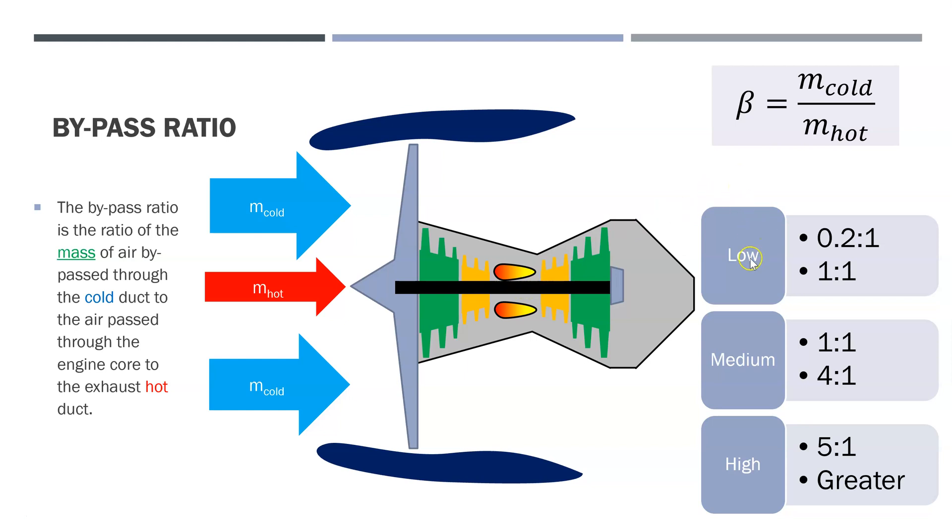Low bypass ratios will be somewhere between 0.2:1 to 1:1. A medium bypass engine will have a ratio of about 1:1 to 4:1. And a high bypass ratio is 5:1 or greater.